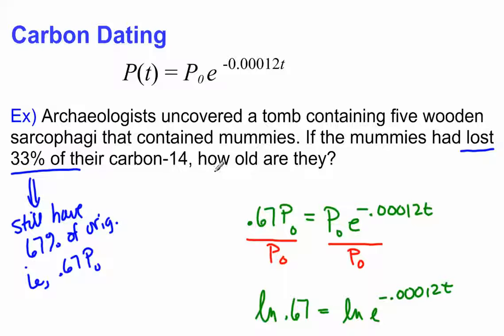So can we estimate how old they are? We don't know how much they started with, but we know they've lost 33% of the original, which means what? They have 67% of the original still remaining.